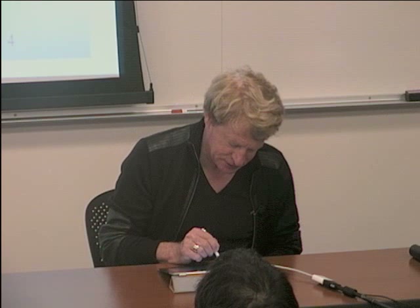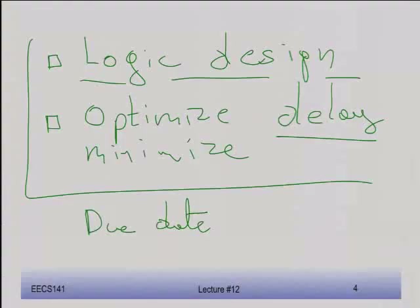If you look in the project definition that's online right now, we give you a lot of numbers and information, so you should be all set to start running. The due date is just before spring break — I believe it's on a Wednesday, probably around the 20-something of March. You have about two and a half weeks. Due date: Wednesday, 5 p.m., just before spring break.